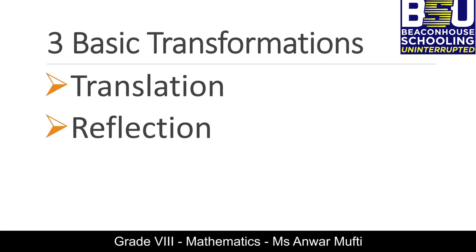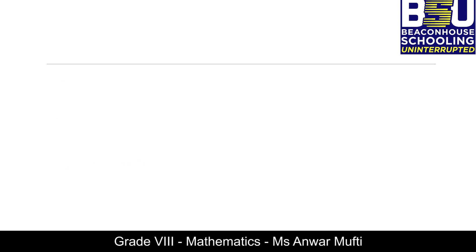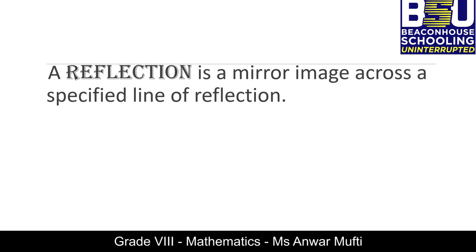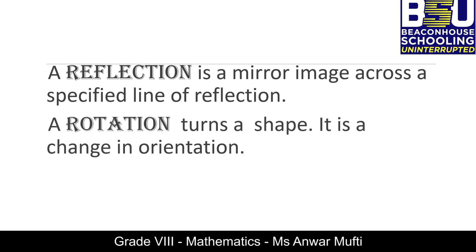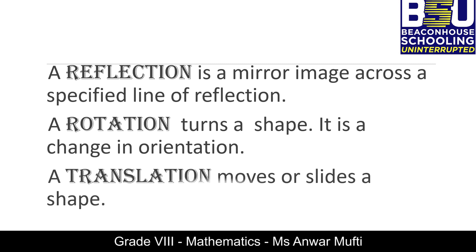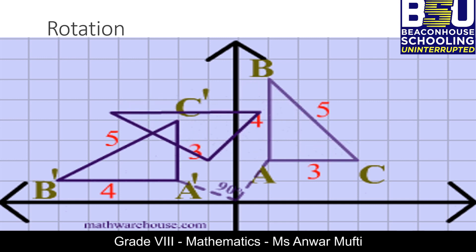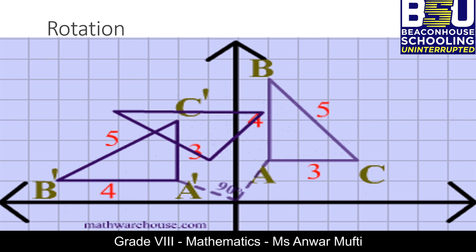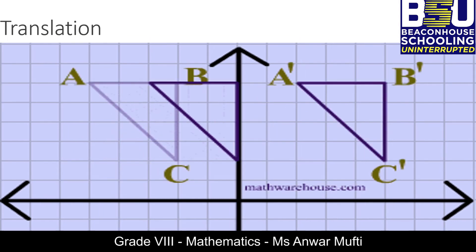Reflection is a mirror image across a specified line of reflection, whereas rotation is turning of a shape — it is a change in orientation. Translation is the movement or sliding of a shape. Here you can see that the triangle is being rotated or turned; the rotation is anti-clockwise. Here you can see the movement of the triangle.